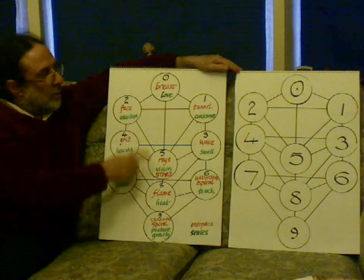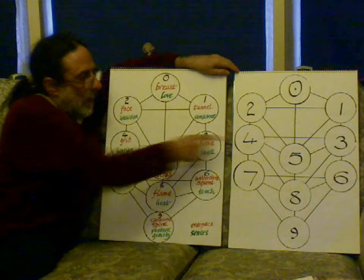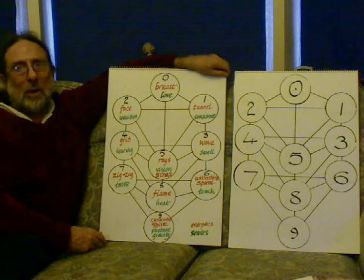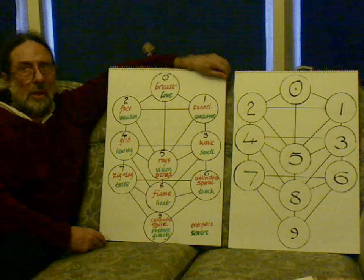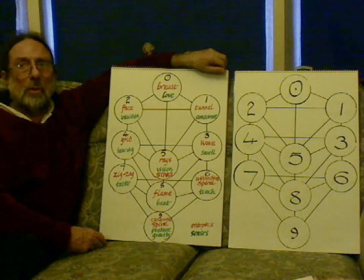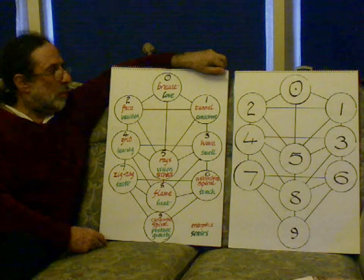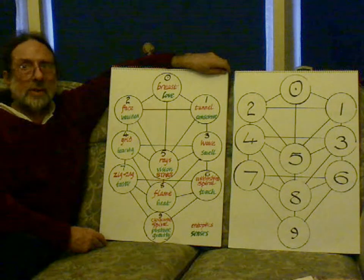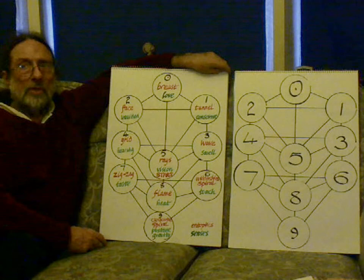So the numbers, the shapes of the numbers are the Entoptics. And the Entoptics refer to different brain areas and these are root meanings in our minds, in our understanding.